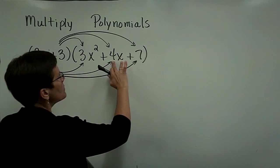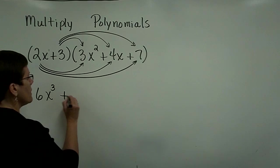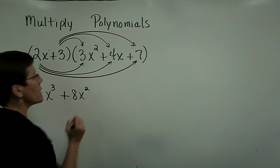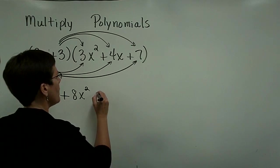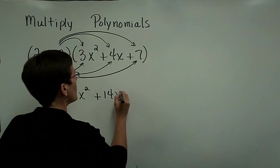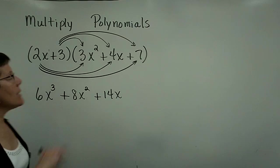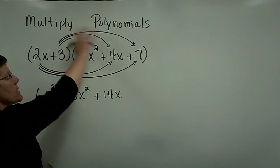2x times 4x is 8x squared. 2x times a positive 7 is a positive 14x. Now let's go ahead and distribute this 3 times everything.